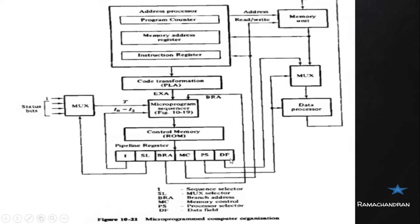The pipeline register holds different fields of the micro instruction fetched from control memory. The fields are: I, SL, BRA, MC, PS, and DF. The I field is a 3-bit input to the microprogram sequencer. The SL field is the selection field of a multiplexer; based on this field value, the multiplexer selects one among different status bits as its output.